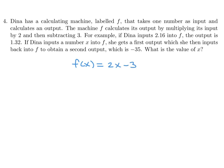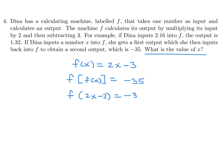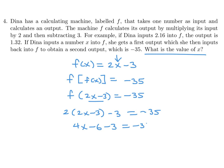So f(x) = 2x minus 3, and the second output is minus 35. We plug f(x) back into f: 2 times (2x minus 3) minus 3 equals minus 35. That gives 4x minus 6 minus 3 equals minus 35, so 4x equals minus 35 plus 9, which is minus 26, and therefore x equals minus 26 over 4, or minus 6.5.